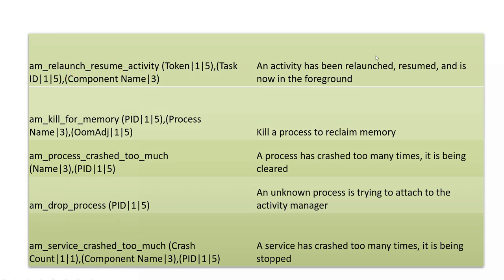`am_relaunch_resume_activity` — the activity has been relaunched, resumed, and is now in the foreground. The task ID is the application ID and component name is the package name of the app. `am_kill_for_memory` — whenever there is low memory in the device but we have a critical application to execute, when we kill a process to reclaim memory, this log is logged in event logs along with the out-of-memory score and process name. `am_process_crashed_too_much` — when a process has crashed too many times, this message is logged telling it is being cleared. `am_drop_process` — an unknown process is trying to attach to the activity manager.